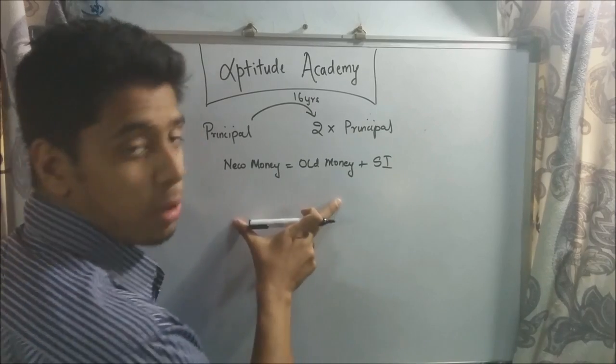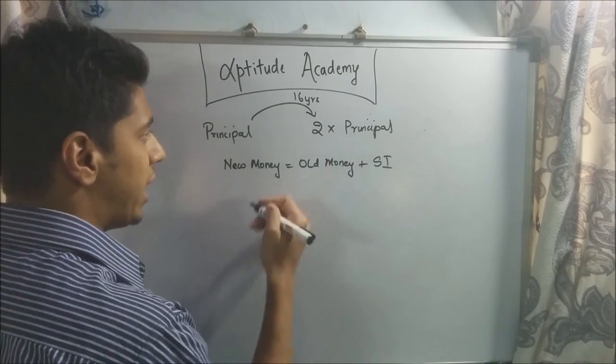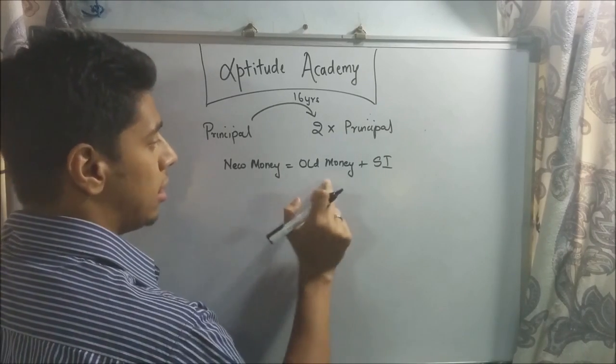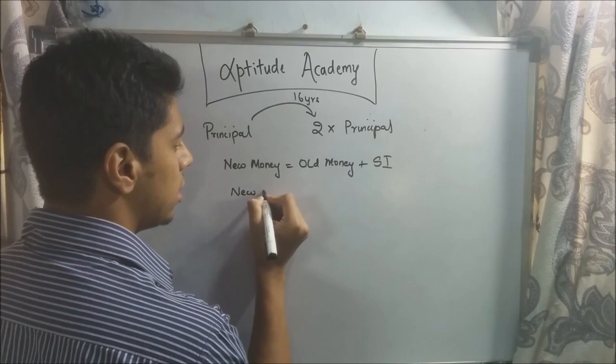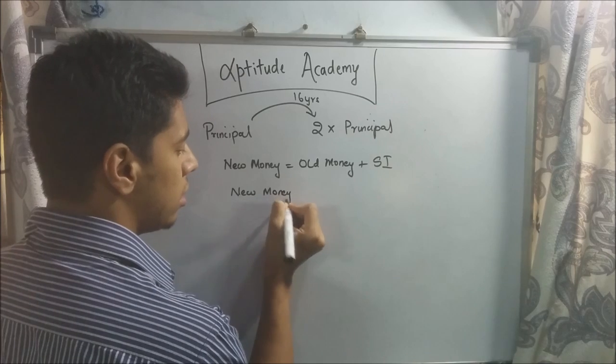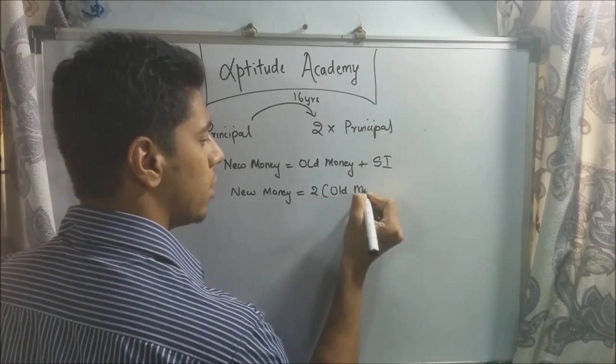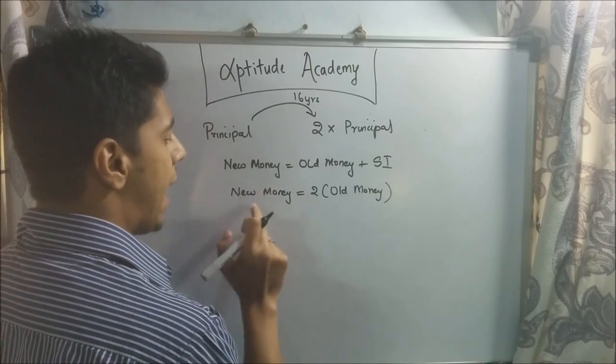Now, if you don't understand this equation, you need to go and watch part 1 of my video. What they're saying is your new money, when you go to take it after 16 years, should be equal to twice the old money itself. So now your new money is actually equal to 2 times your old money. Keep in mind, your old money is the principal amount, what you gave him, and new money is what you get.